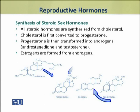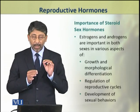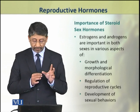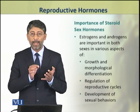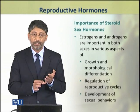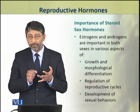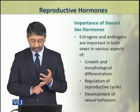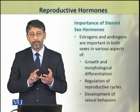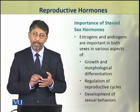Steroid sex hormones — that is, estrogens, androgens, and progesterone — are very important in both sexes in various aspects of growth and morphological differentiation. They are also important in the regulation of reproductive cycles, and they are also important in the development of sexual behaviours.